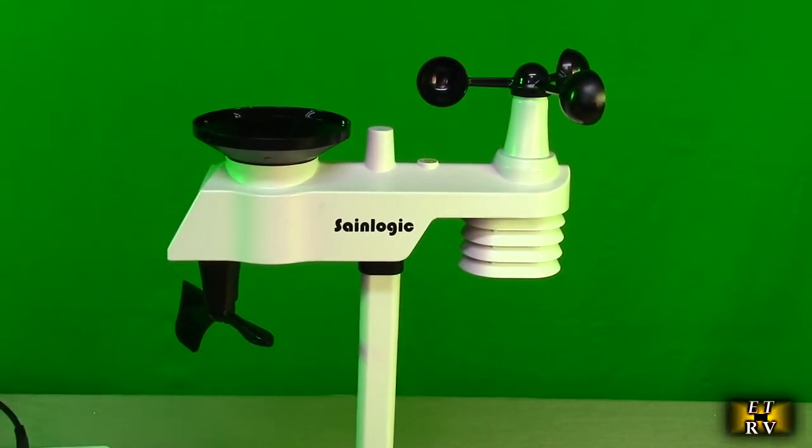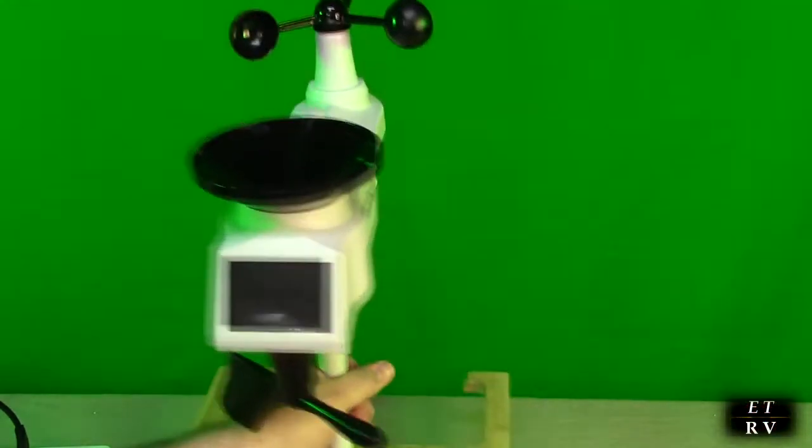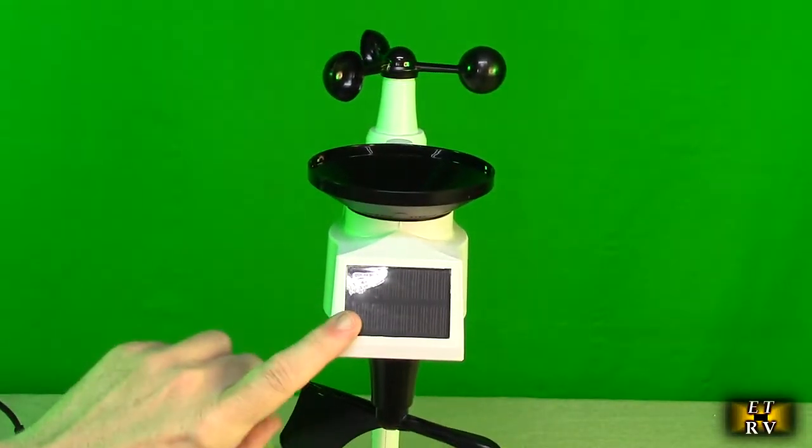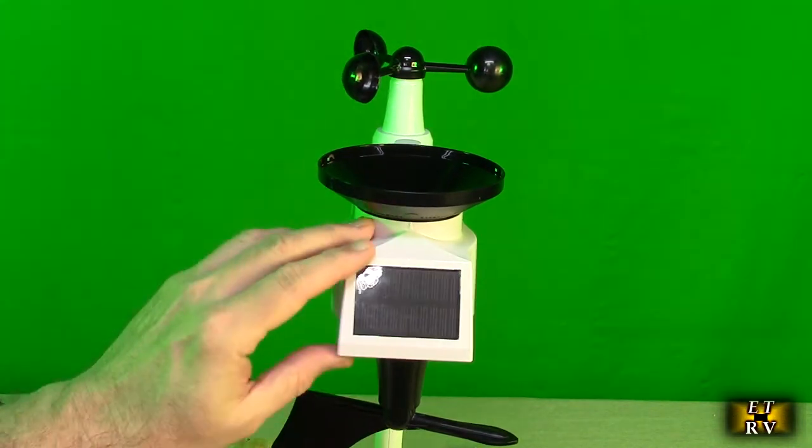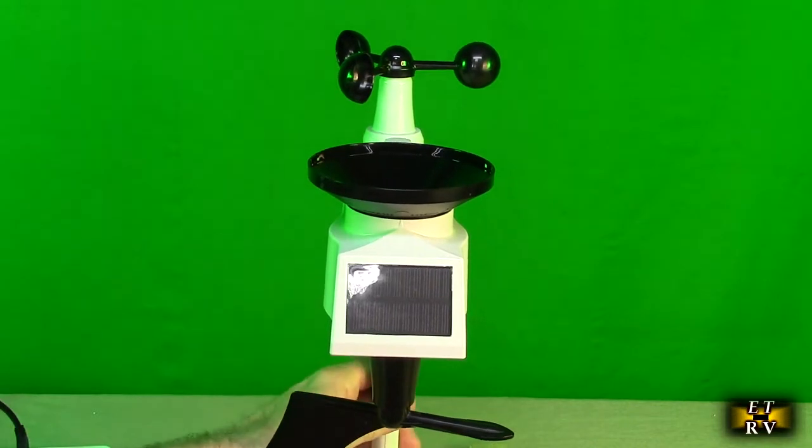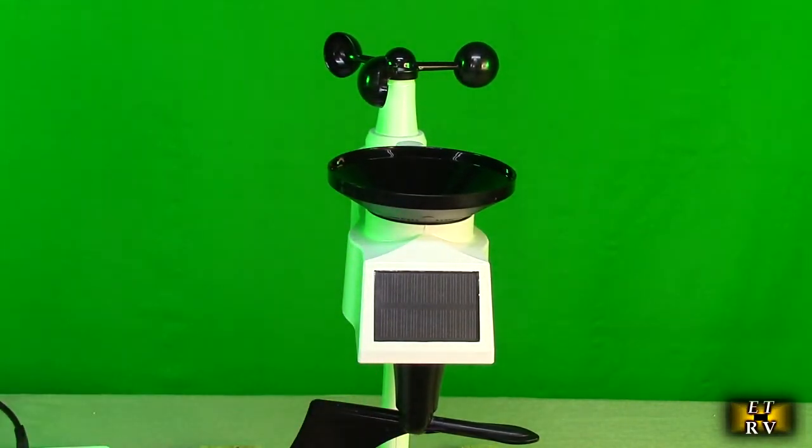Now there is a solar panel that is on the front of this unit right here. And that doesn't charge the battery. That solar panel is used as part of the data. And it's used to sense sunrise and sunset and other parameters in the software. But it won't charge the battery. So don't use rechargeable batteries.